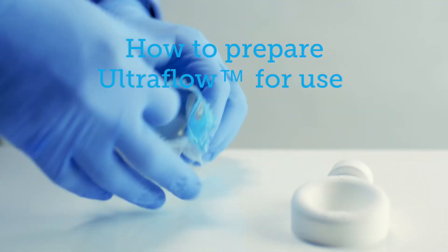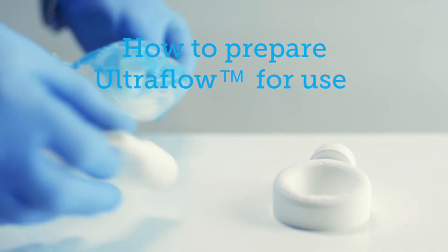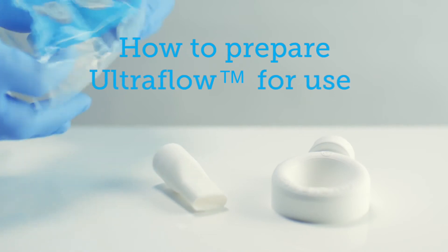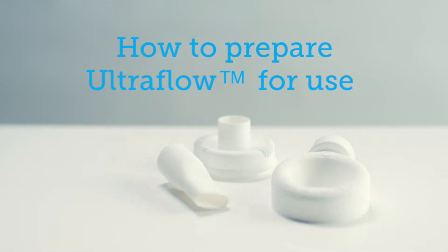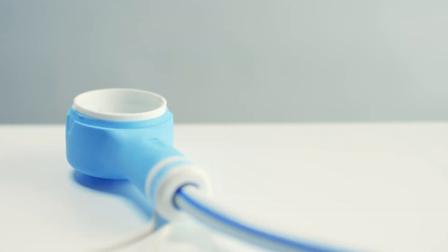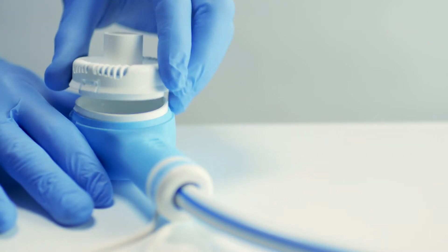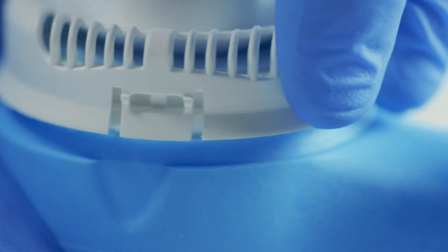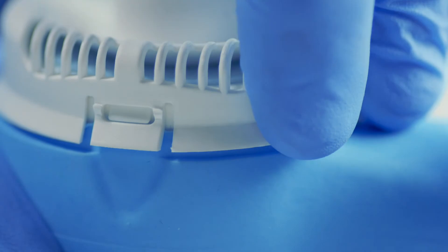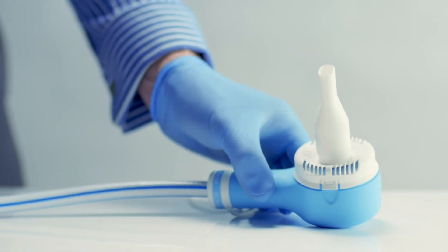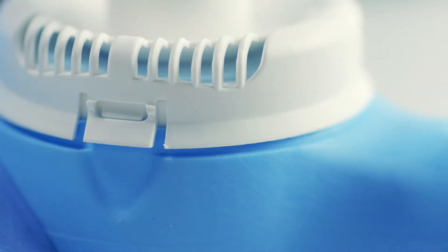This is how to prepare Ultraflow for use. Take an exhalation valve and place it on the demand valve. Rotate until the clips engage and press home. You should hear it click into place. Check it's securely fitted.